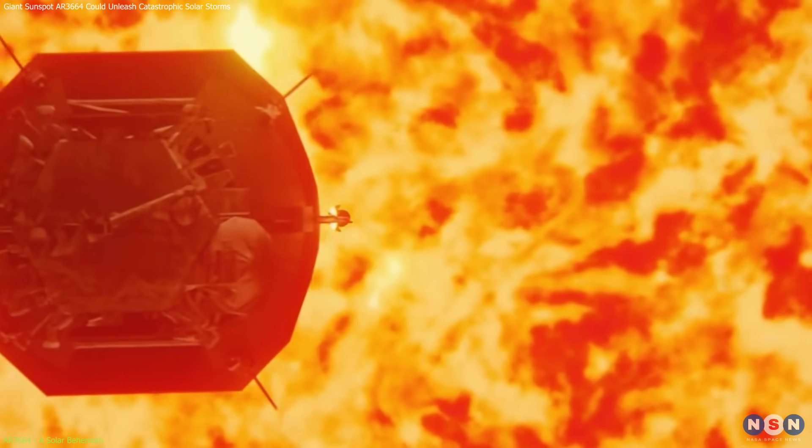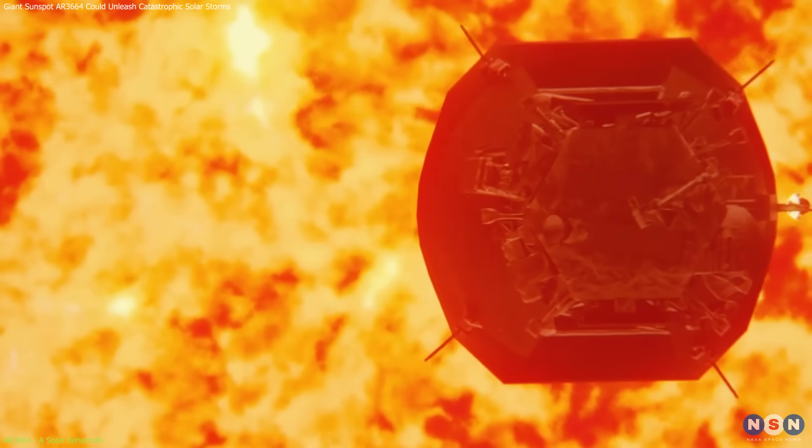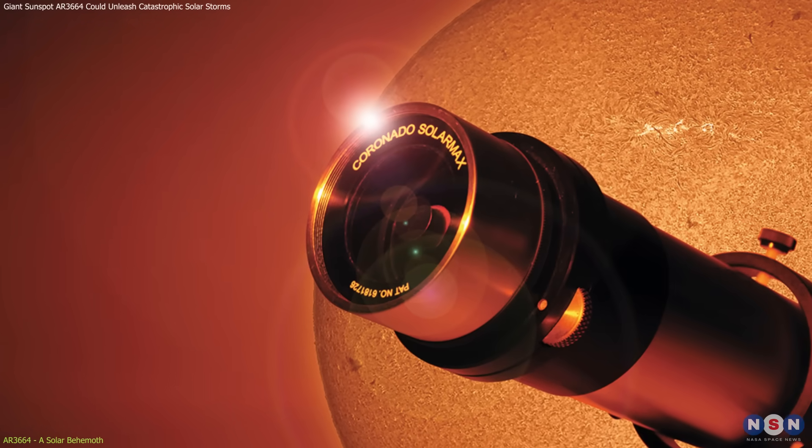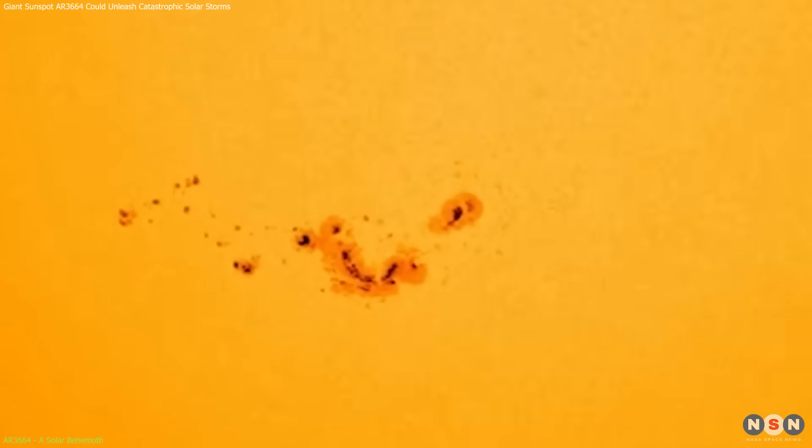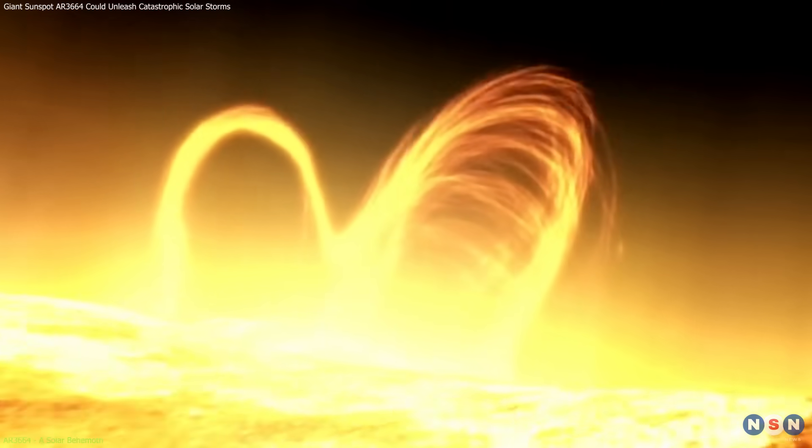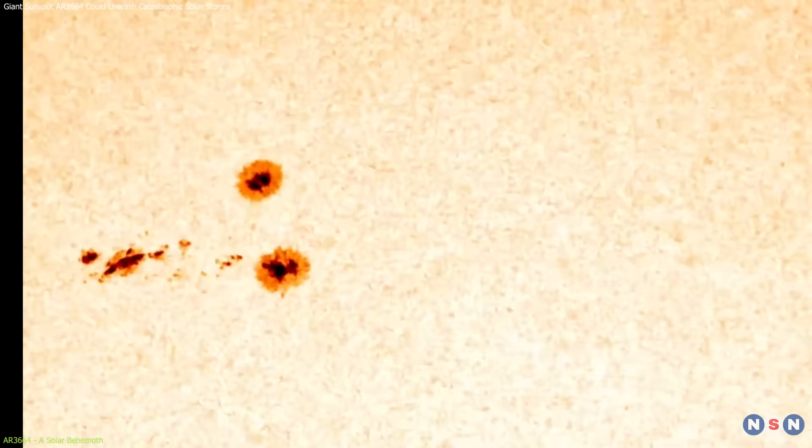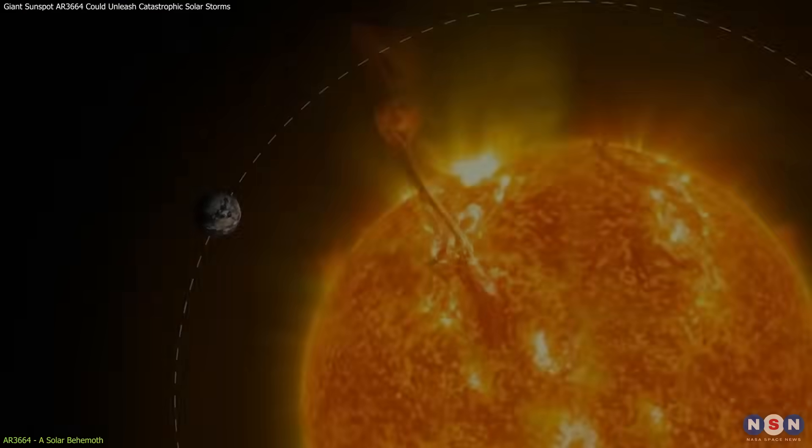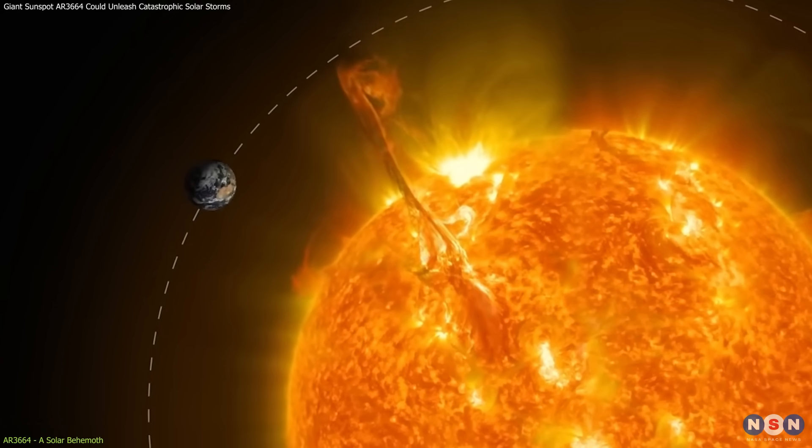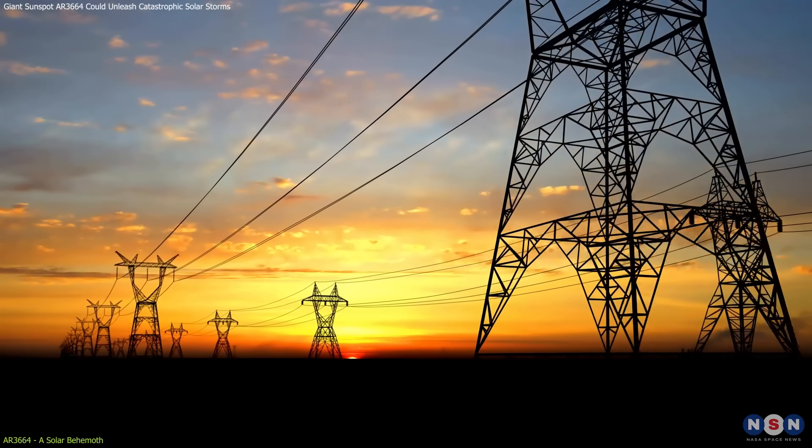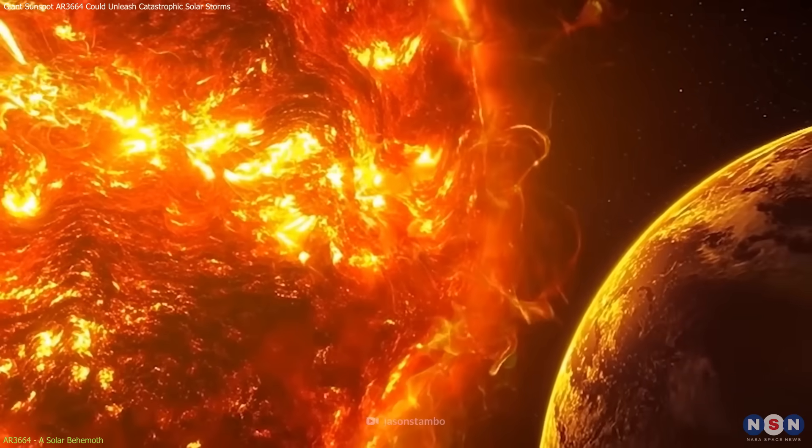This potential for disruption underscores the importance of monitoring sunspots like this one. Scientists use a variety of tools, including space-based observatories like NASA's Solar Dynamics Observatory and ground-based solar telescopes to keep a close eye on these features. By studying the growth, movement, and magnetic properties of this sunspot, researchers can better understand the processes that lead to solar flares and CMEs. This knowledge is crucial for improving predictions of space weather events, which in turn helps to protect satellites, power networks, and other critical infrastructure from the sun's unpredictable temperament.